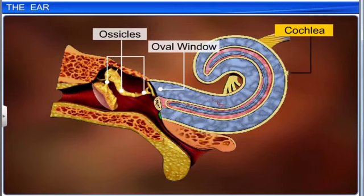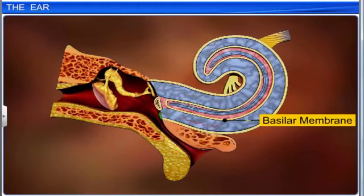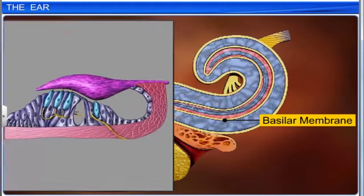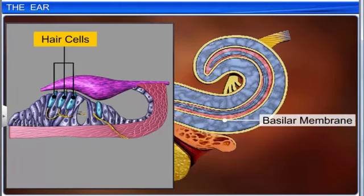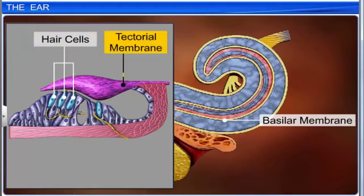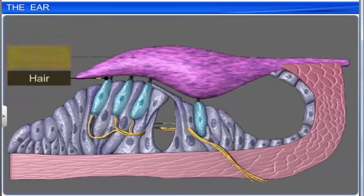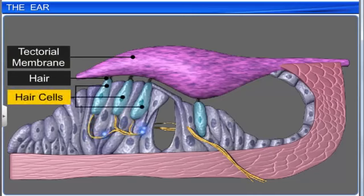This generates waves in the lymph that induces a ripple in the basilar membrane. The vibrations of the basilar membrane then bend the hair cells, pressing them against the tectorial membrane. The hairs move back and forth against the tectorial membrane, which stimulates the hair cells, or receptor cells.